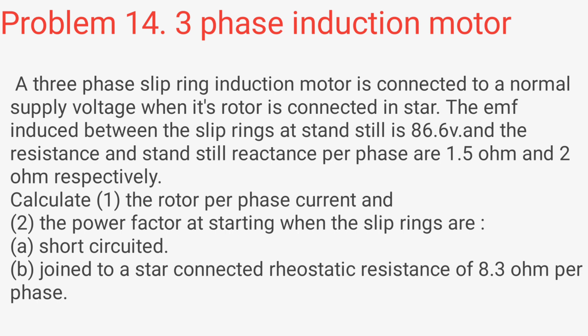Calculate 1. The rotor per phase current and 2. The power factor at starting when the slip rings are a short-circuited b joined to a star-connected rheostatic resistance of 8.3 ohm per phase.